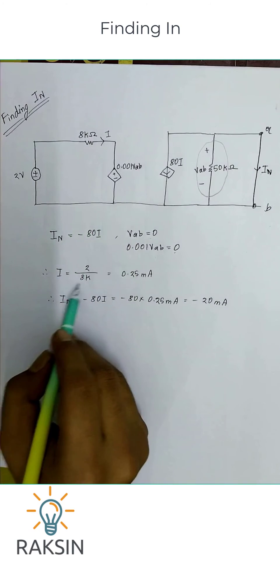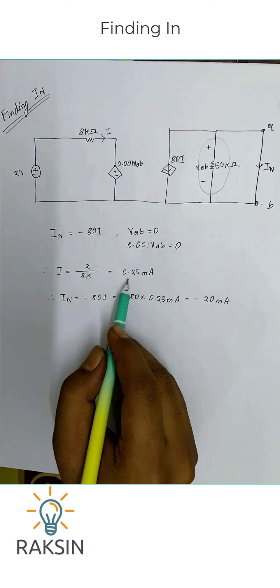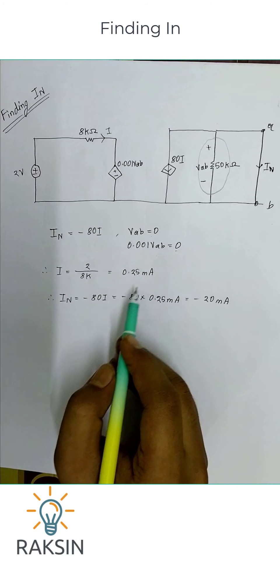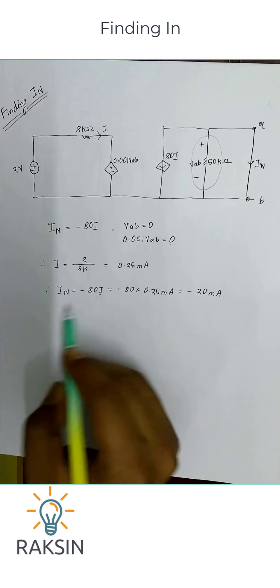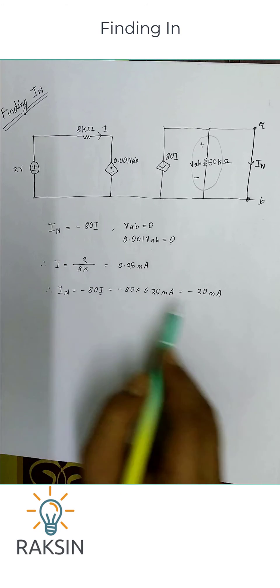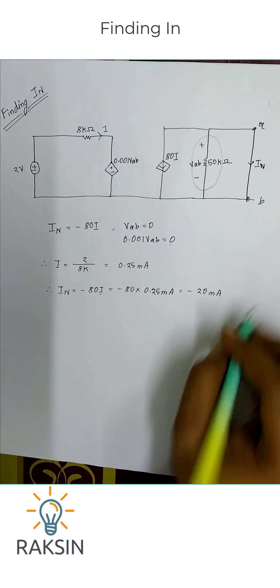...will be 2 volt divided by 80 kilo ohm, which is 0.25 milliampere. Putting the value of I here, we'll get In is minus 20 milliampere.